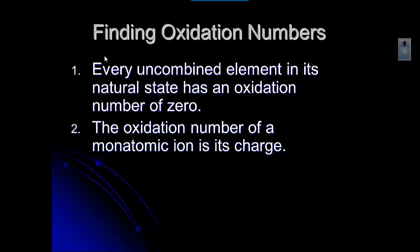When you have a monatomic ion — the mono part means one — an ion that consists of one atom, that oxidation number is going to be its charge.